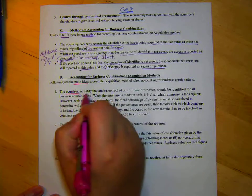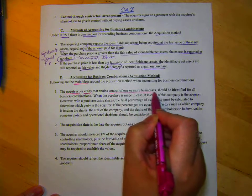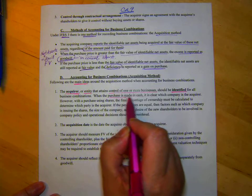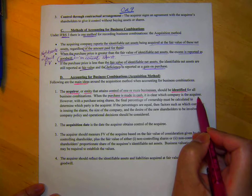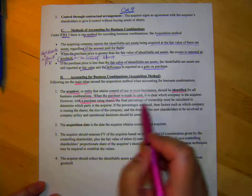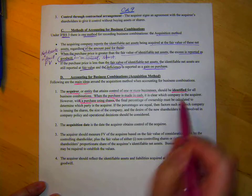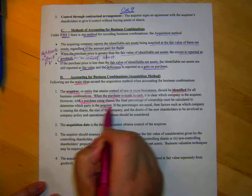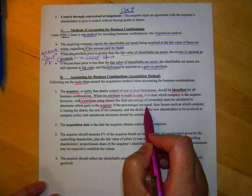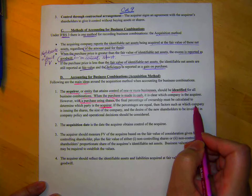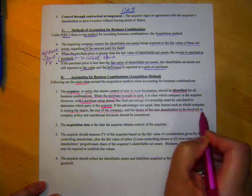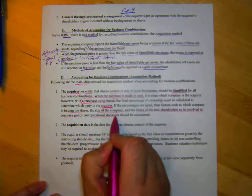The acquirer or entity that attains control of one or more businesses should be identified for all business combinations. If a purchase is made in cash, it is clear which company is the acquirer. When you purchase using shares, the final percent of ownership must be calculated to determine which party is the actual acquirer or the payer. If the percentages are equal, and we're going to do an example of this, don't worry, then factors such as which company is issuing the shares, the size of the company, and the desire of the new shareholders to be involved in company policy and operational decisions should be considered.